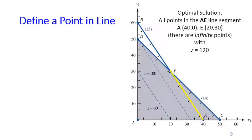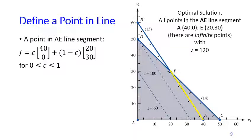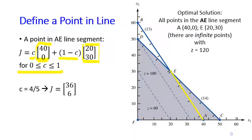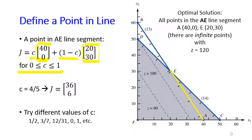If you want a simple way to find any point J on the AE line segment, you can use a convex combination: J = c·A + (1−c)·E, where c must be between 0 and 1 inclusive. For example, with A = (40, 0) and E = (20, 30), taking c = 4/5 gives the point J = (x1, x2) = (36, 6). You may try different values of c such as 1/2 or 3/7 to get other points along the segment.